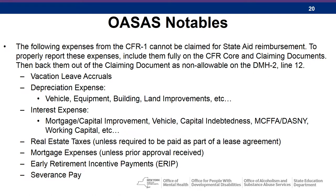The following expenses from the CFR-1 cannot be claimed for state aid reimbursement. To properly report these expenses, include them fully on the CFR core and claiming documents, then back them out on the claiming document as not allowable on the DMH-2 Line 12. They include: vacation leave accruals; depreciation expense such as vehicle, equipment, building, land improvements, etc.; interest expense including mortgage, capital improvement, vehicle, capital indebtedness, DASNY, working capital, etc.; and real estate taxes, unless required to be paid as part of a lease agreement.